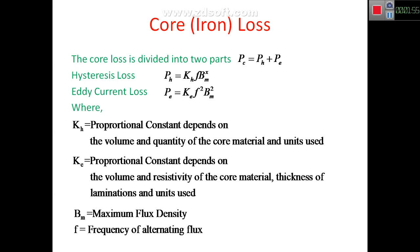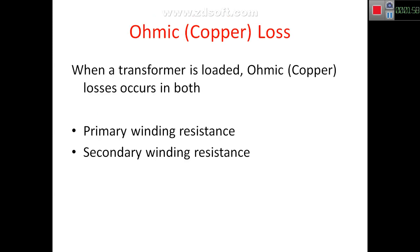The next loss is ohmic loss. Ohmic loss, also called copper loss, is the I squared R loss. There are two resistances in a transformer: the primary winding resistance and the secondary winding resistance. When current flows through the primary it is I1 squared R1, and through the secondary it is I2 squared R2. Copper loss is present when the transformer is loaded; if there is no load, the copper loss is very small and can be neglected.